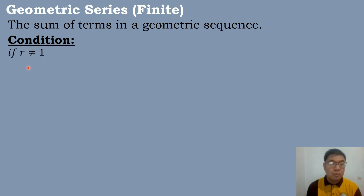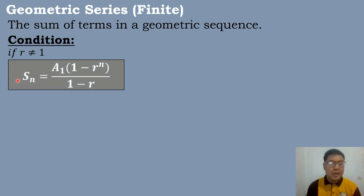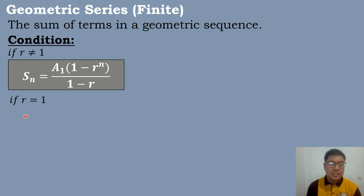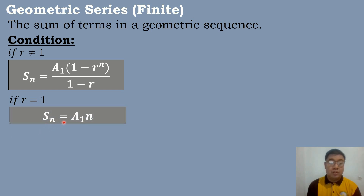The first condition: if R is not equal to 1, or the common ratio is not equal to 1, we will use the formula S sub n equals A sub 1 times the quantity (1 minus R raised to the nth power) all over (1 minus R). The second condition: if R is equal to 1, S sub n is equal to A sub 1 times n.